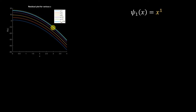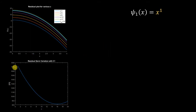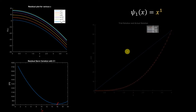This magenta curve corresponds to our solution after minimizing the residual norm, where we get c = 16. This plot shows the residual norm variation with c — as you change c, you can see that the residual norm becomes minimum at c = 16.